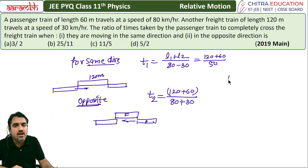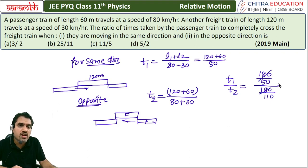If we have to find the ratio t1 by t2, we write this will be 180 divided by 50 and this will be 180 divided by 110. If we cancel it, the answer will be 11 by 5.